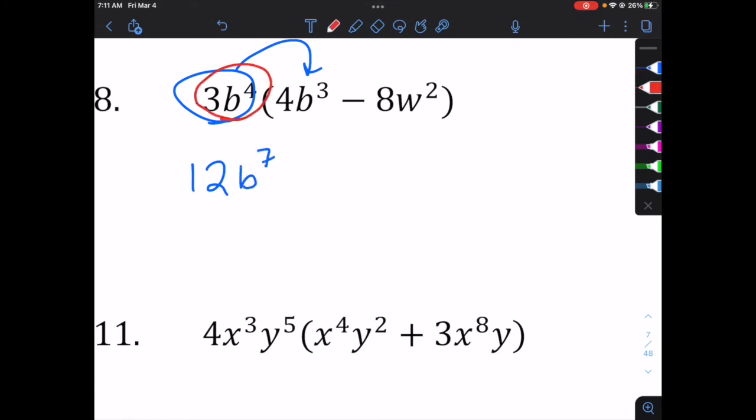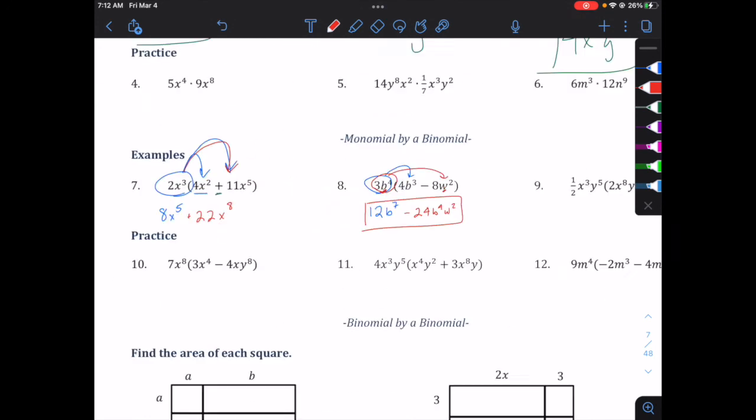Now we take 3b to the fourth and we multiply it by the negative 8w to the second. We can multiply the coefficients 3 times 8 and we get, well, 3 times negative 8 is negative 24. But do not add the exponents of different bases. So we have a base b and a base w. We're just going to put them kind of next to each other. b to the fourth, w to the second. We can't add those exponents together. That is our answer.